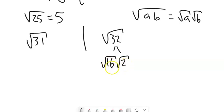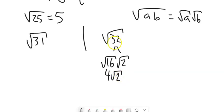The square root of 16 is 4 — I can do that square rooting. But the square root of 2, I'm not going to get any further than that. So I'm going to leave this as 4 times the square root of 2. And now this is simplified. I've done as much of the square rooting as I can.